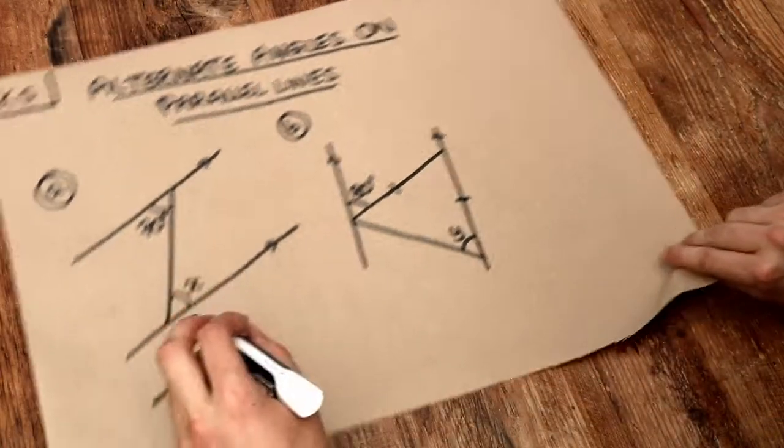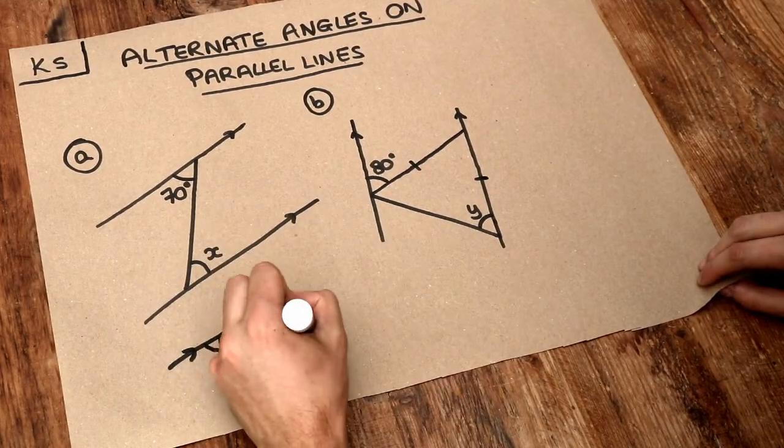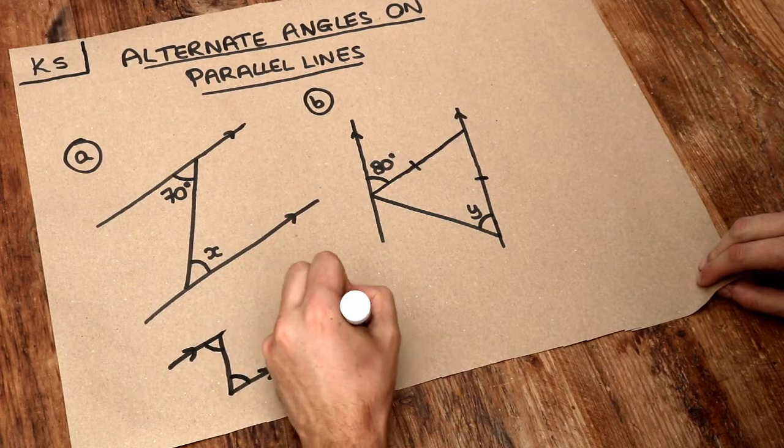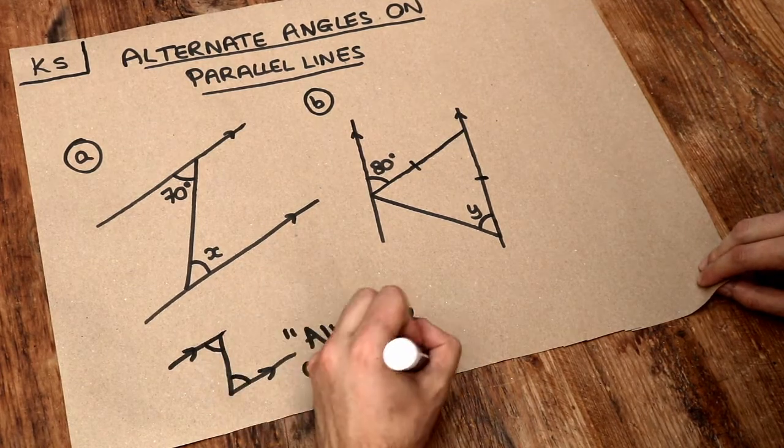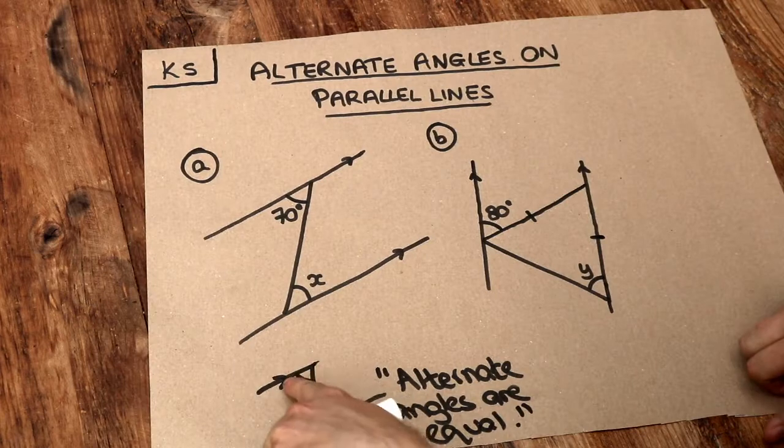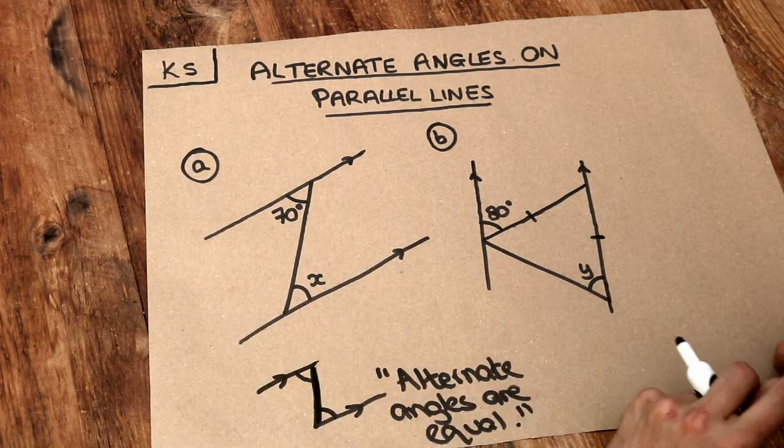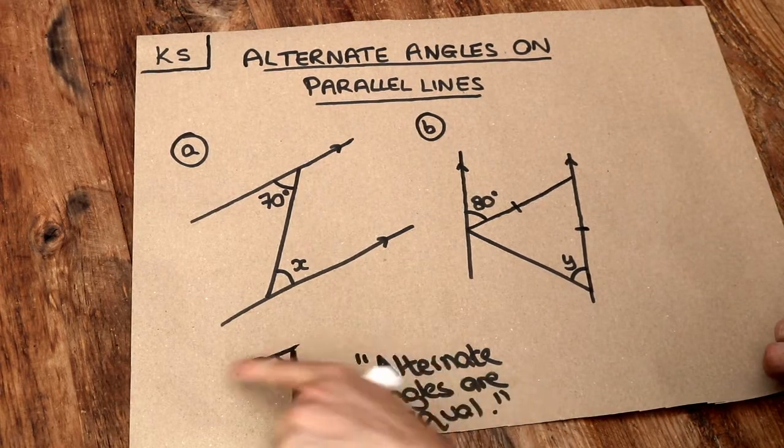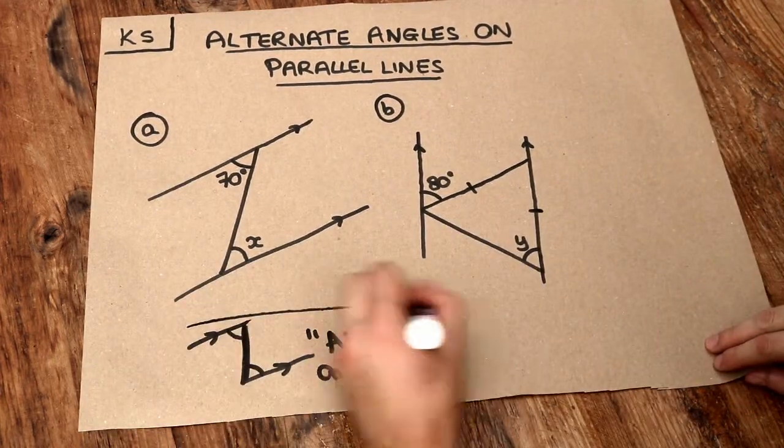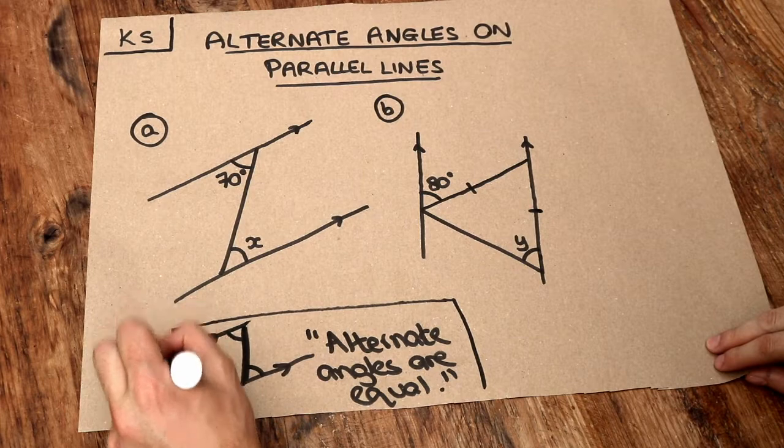If you're asked for a justification in an exam for a particular angle, we can write that alternate angles are equal. They're alternate angles because they're on alternate sides of this connecting line here. They're sometimes known as Z angles because of this Z shape, but you shouldn't write that in an exam. That's not a formal name.